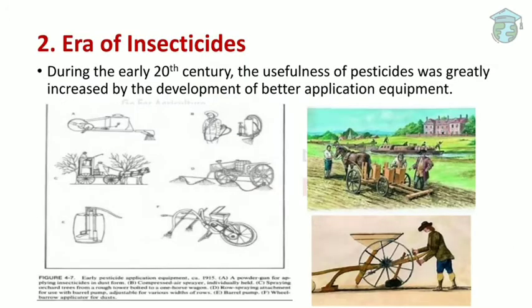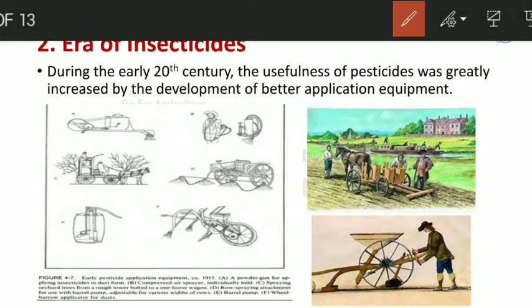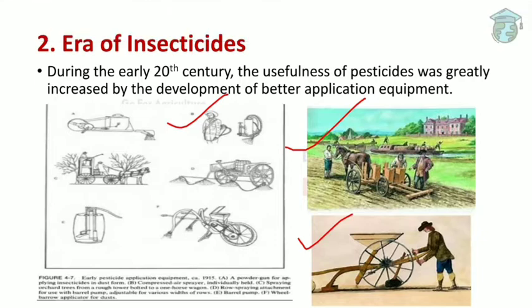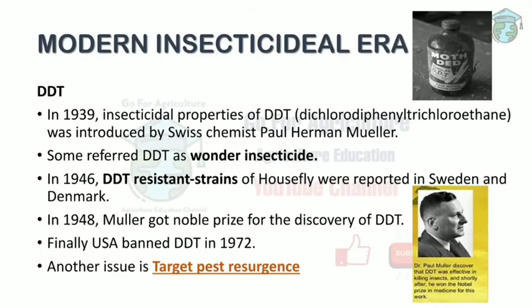The era of insecticides: during the early 20th century, demand for pesticides increased and people started developing better application equipment. For example, a horse and cart was used for pesticide application, a wheel sprayer was used, and a man storing pesticide in a tank to spray directly on crops as a foliar spray.